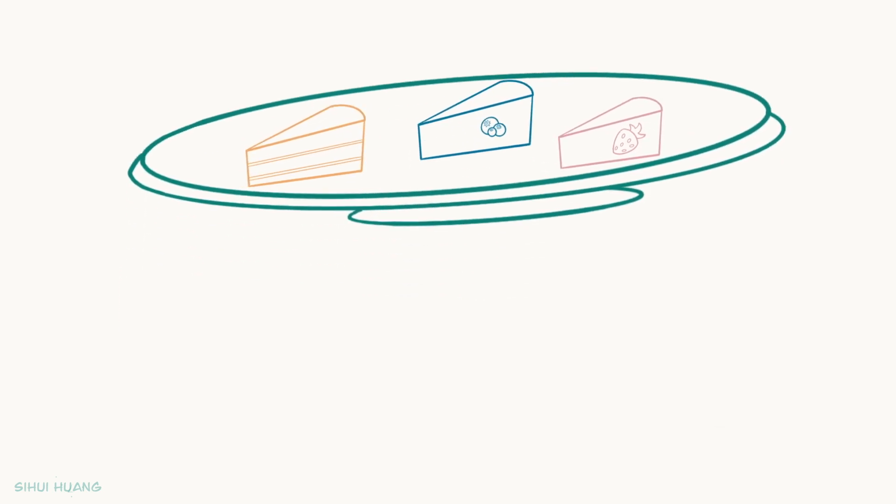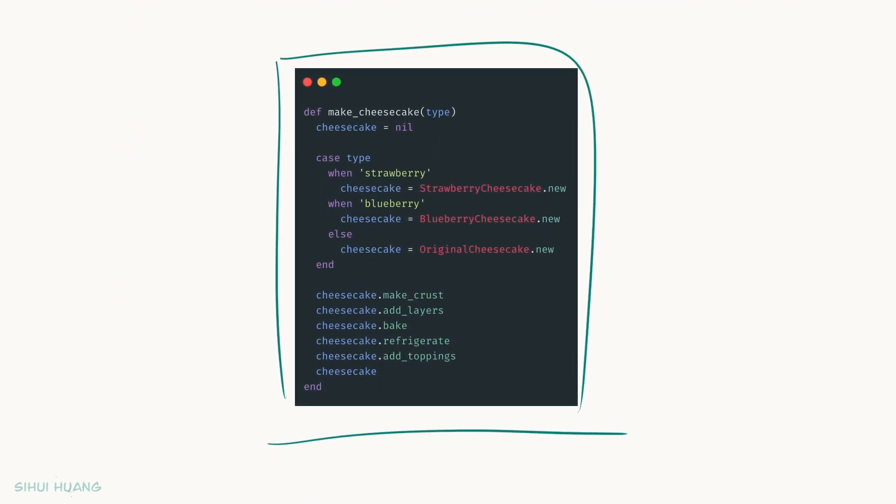And the code looks like this. We first select the right type of cake. If we want a strawberry cheesecake, we will use the strawberry cheesecake class. If we want a blueberry one, we will use the blueberry cheesecake class. Otherwise, we will just use the original cheesecake class. Then we make the crust, add layers, bake it, refrigerate it, add toppings, and voila, the cake is ready. Easy peasy.